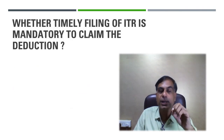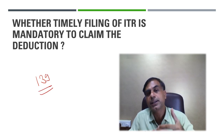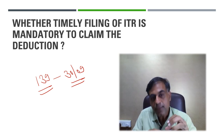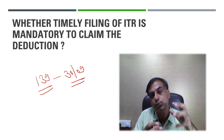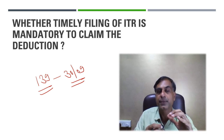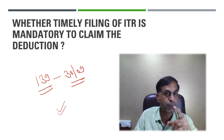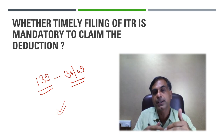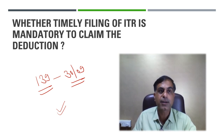Whether timely filing of ITR is mandatory to claim deduction under Section 80C is a very important question. Section 139 gives time limits for ITR filing — for example, for Assessment Year 2021, the due date was extended from 31 July to 30 September. In my opinion, you cannot be denied Section 80C deduction merely because you filed the return late or did not file it on time. Even if you delay your return, you are entitled to claim the benefit of Section 80C.